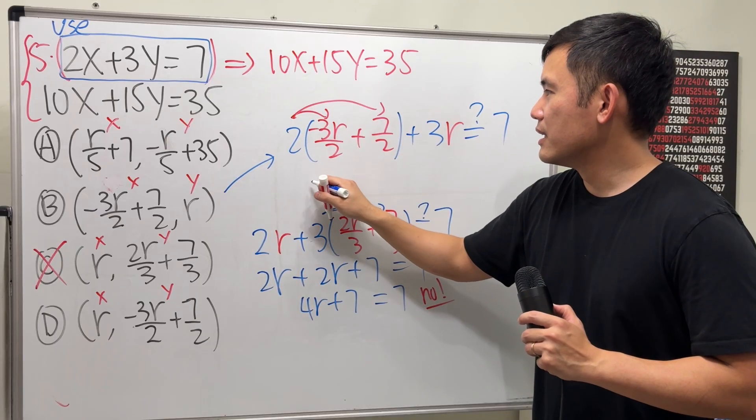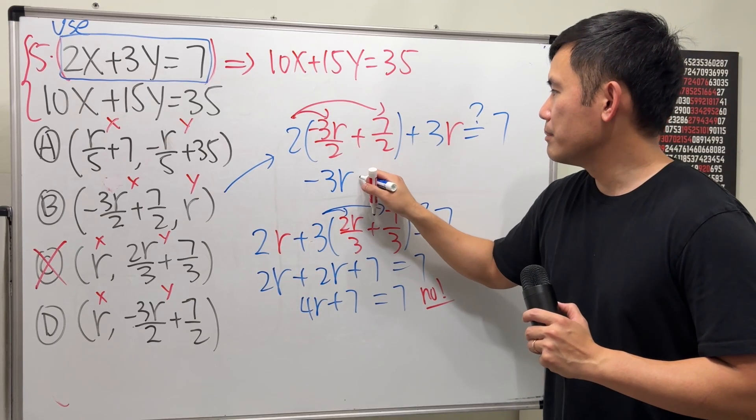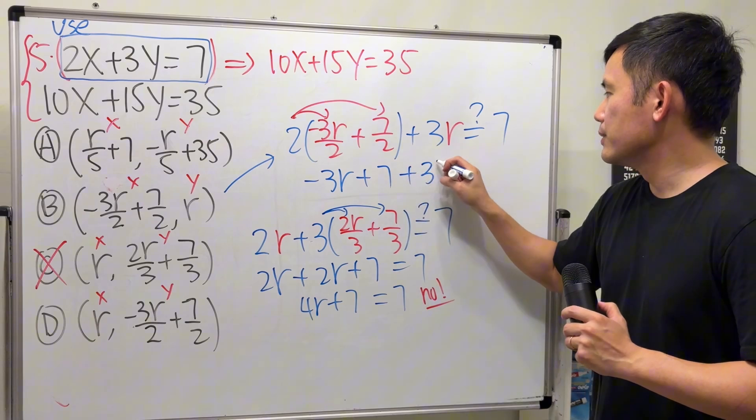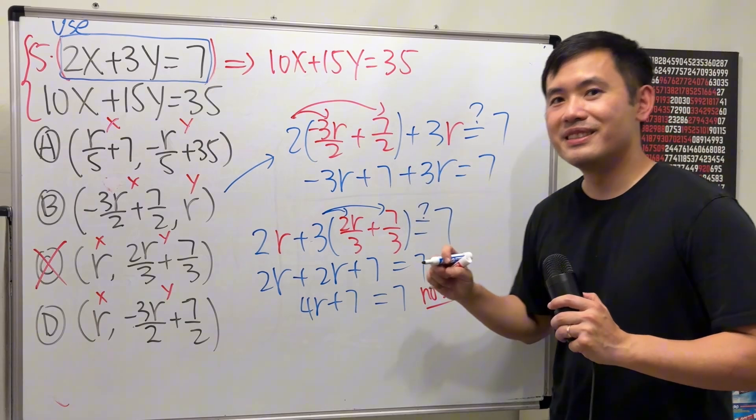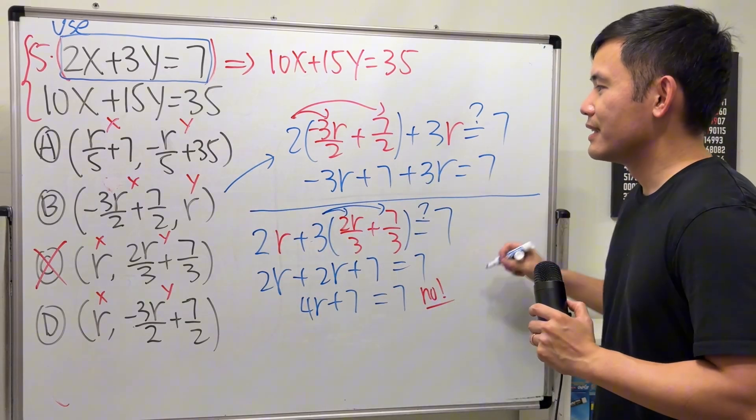This right here gives us negative 3r plus 7. Very nice, huh? And then plus 3r. Do we get 7? Yes.